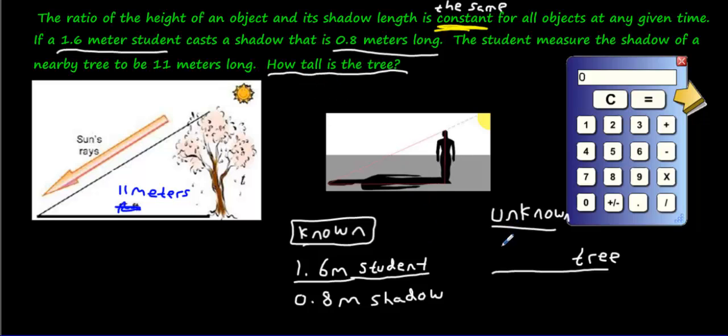How tall is the tree? Blank meters. We know something though here. We know the shadow is 11 meters long. How do we find this unknown? How did we take 0.8 and turn it to 11? That's kind of tricky, isn't it? But you can use the backup strategy, which is called cross multiply and then divide.